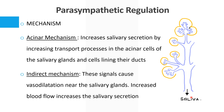Another indirect mechanism is vasodilation near the salivary glands. When there is an increase in blood flow, there is also increased salivary secretion. That is the mechanism by which the parasympathetic system acts.